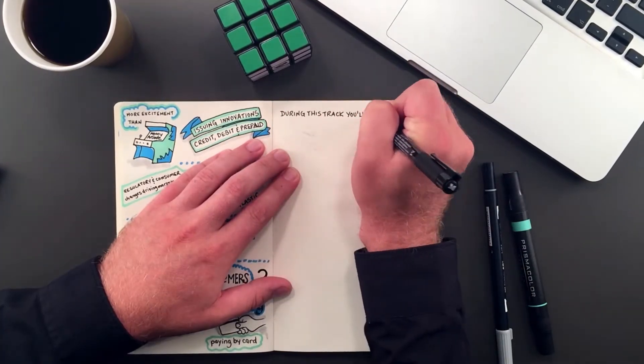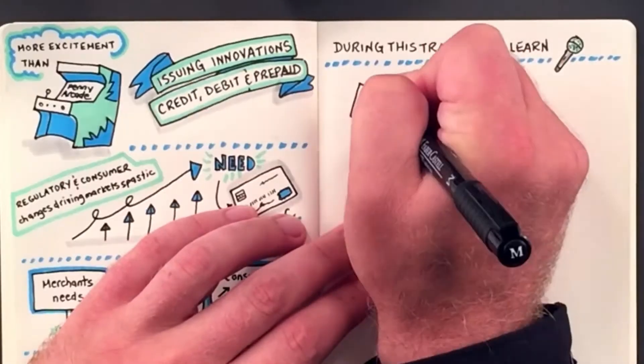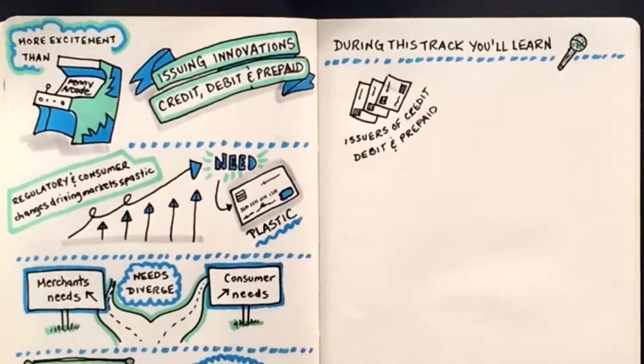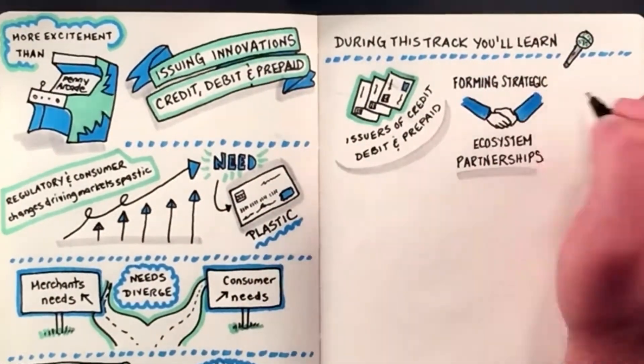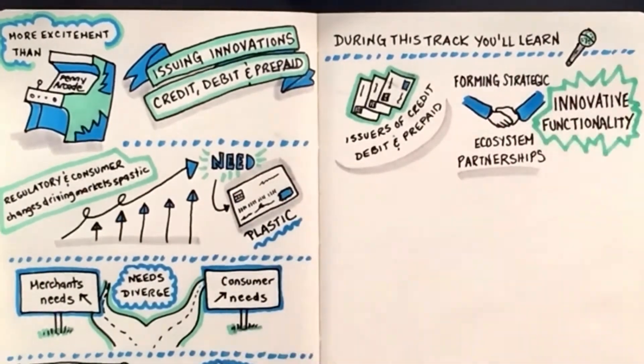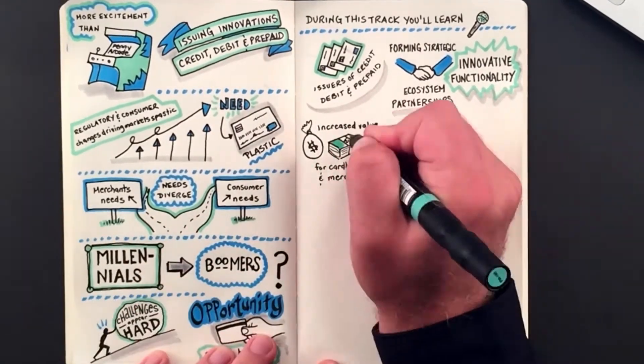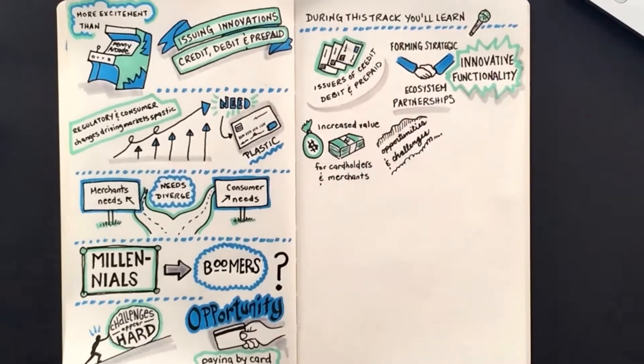During this track, we will uncover how issuers of credit, debit, and prepaid cards are forming strategic ecosystem partnerships to deliver innovative functionality and drive increased value for cardholders and merchants, and uncover the opportunities and challenges faced by issuers that are changing the landscape.